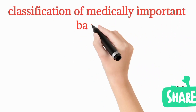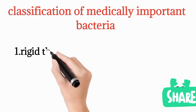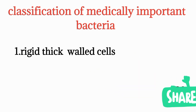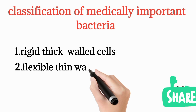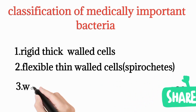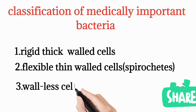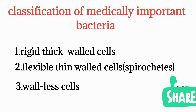Classification of medically important bacteria is based on the presence of cell wall and its features. We have rigid thick cell wall bacteria, flexible but thin wall bacteria also known as spirochetes, and wall-less bacteria which do not have a cell wall. This is the basic broad categorization of bacteria based on the feature of the cell wall.